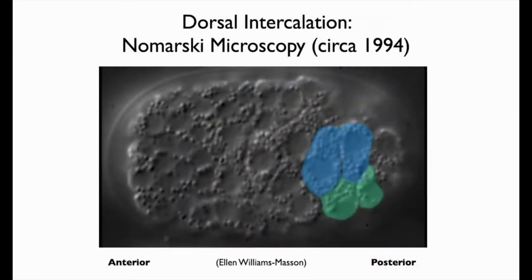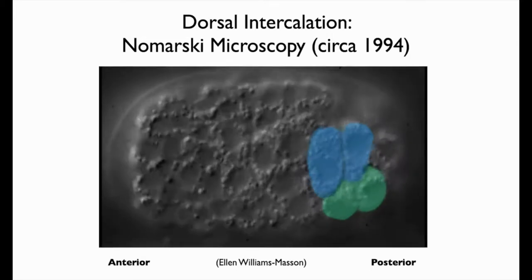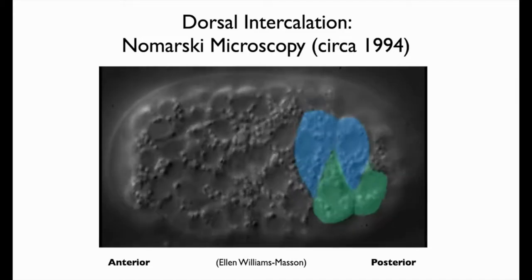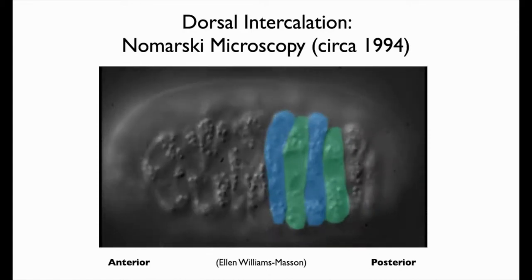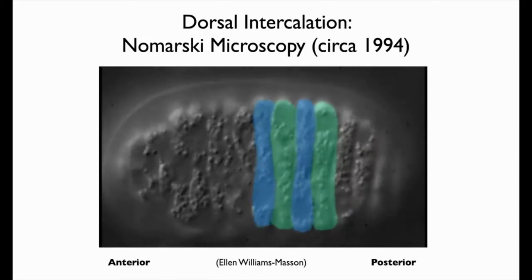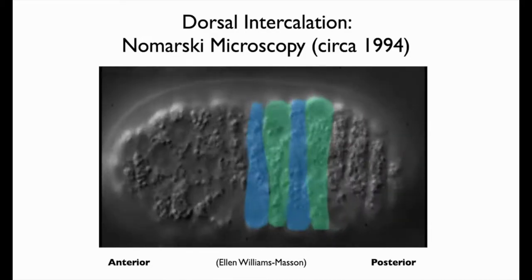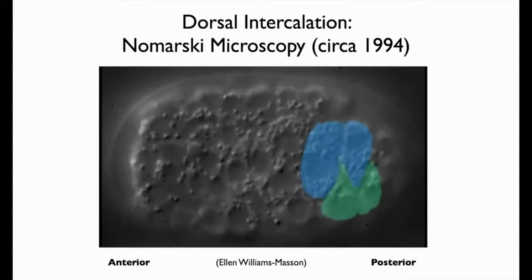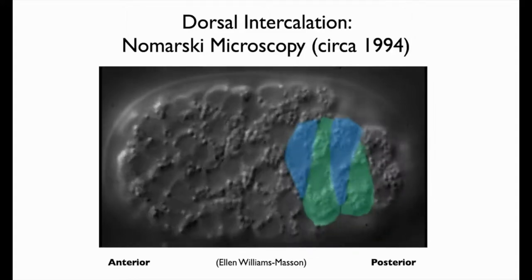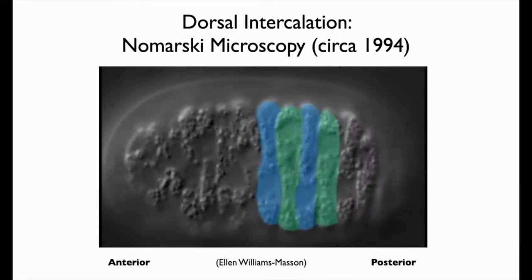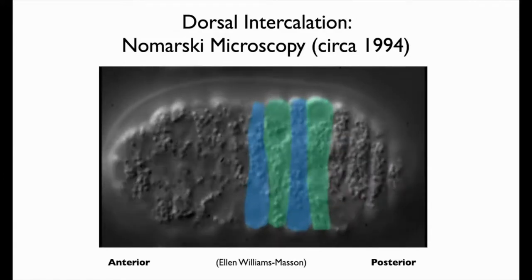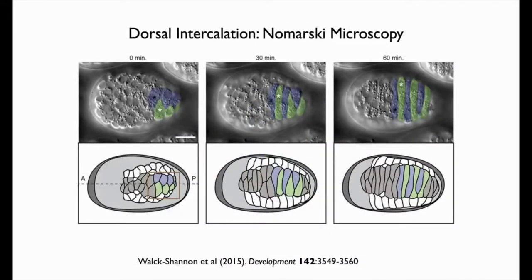Here's an embryo image using Nomarski microscopy, with four cells colorized to show how they change position during dorsal intercalation. Anterior is on the left, posterior on the right. These four cells become wedge-shaped and move between one another in an alternating fashion. By the end, this group of 20 cells in total engage in one round of rearrangement to make a single row of cells across the dorsal midline. As far as I know, this is the simplest case of a convergent extension-type movement.